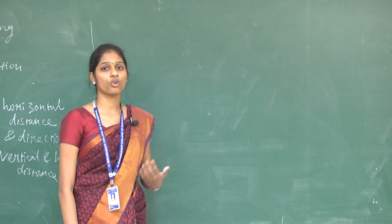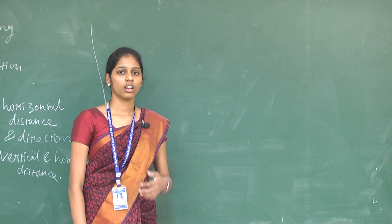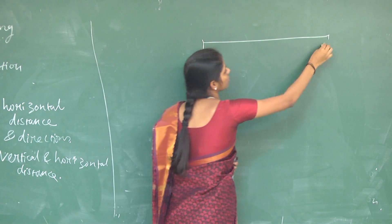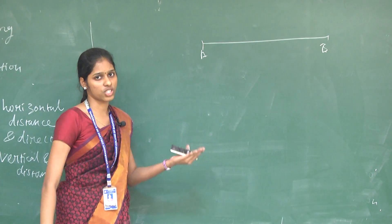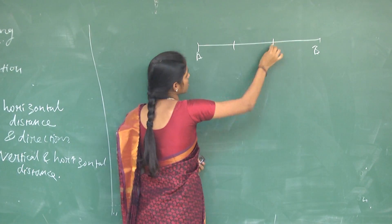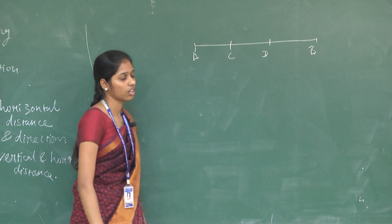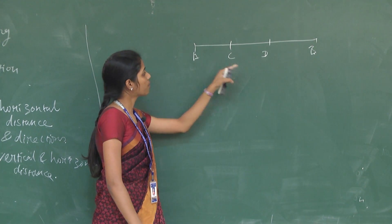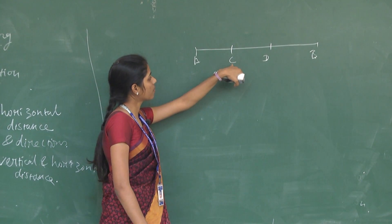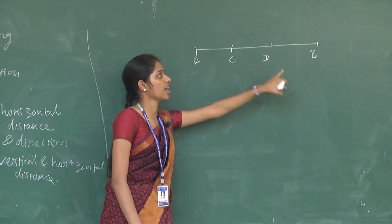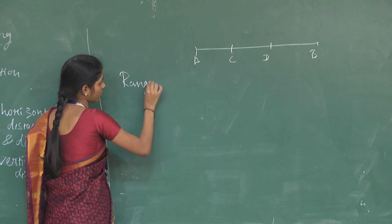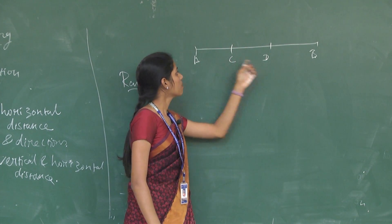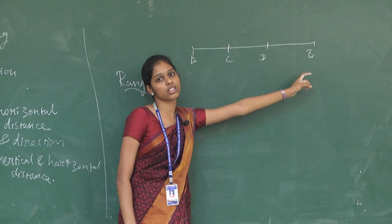Before chaining, we need to understand ranging. To measure the distance from A to B using a chain, intermediate stations C and D must be established. However, C and D may not always fall on the line AB. The process of aligning intermediate points between the two endpoints in a straight alignment is called ranging.